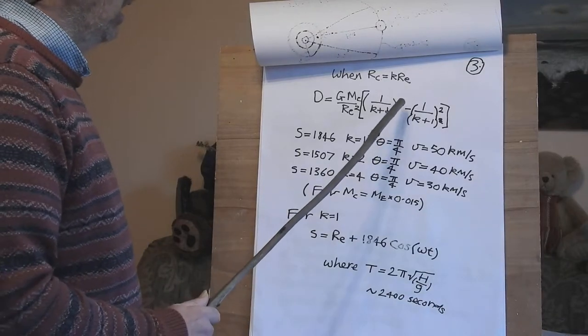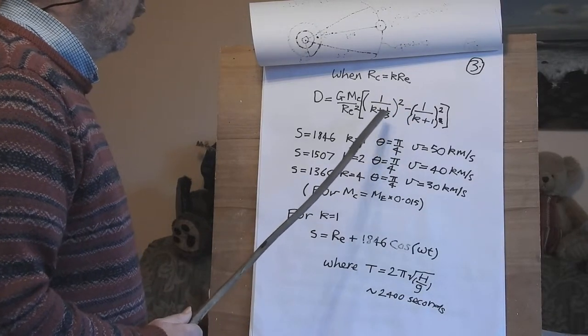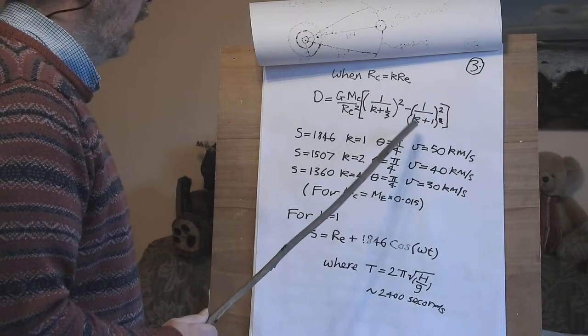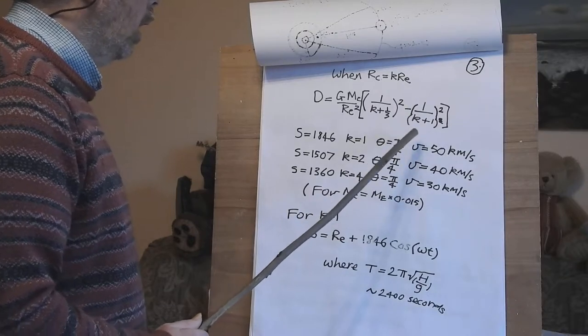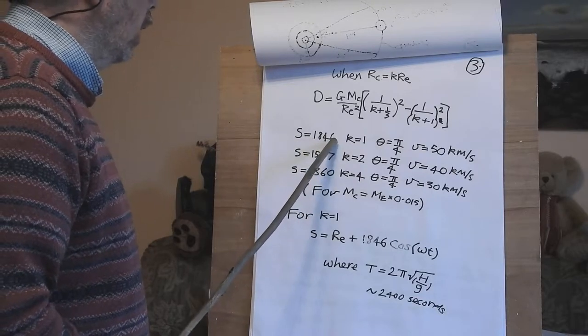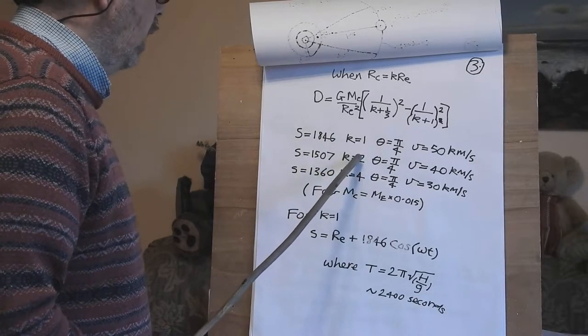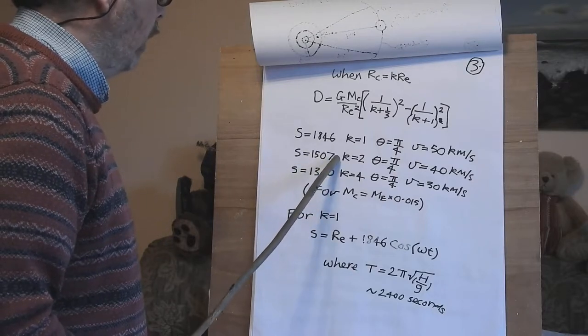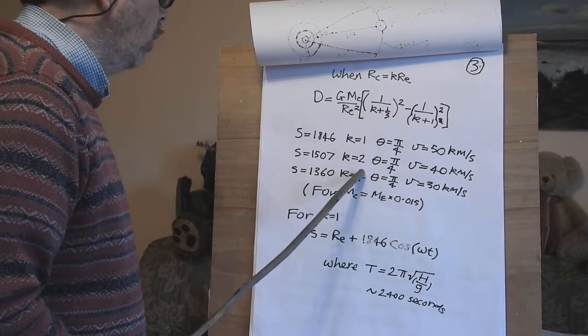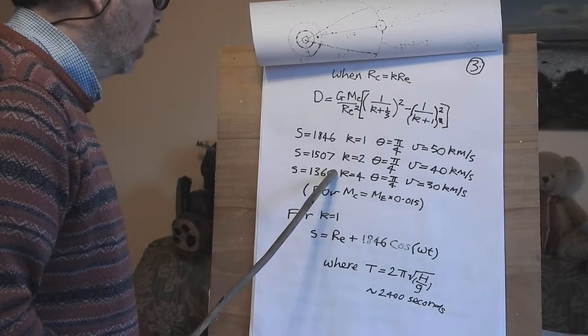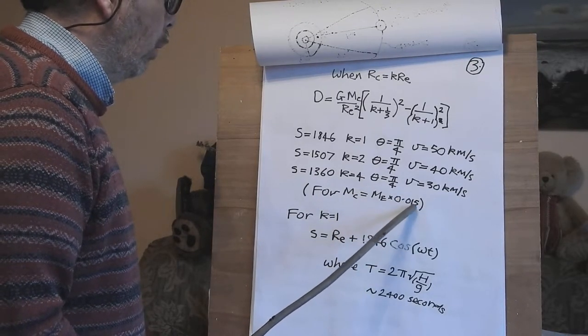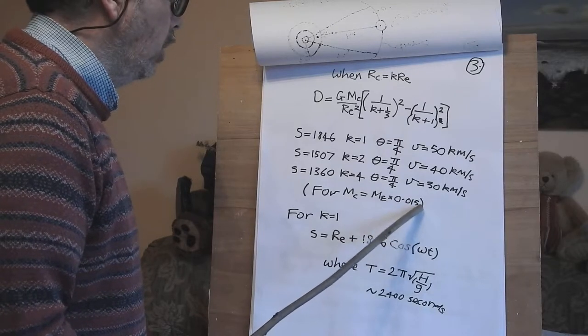When RC equals KRE you get this equation here for the acceleration towards the comet. So for K equals 1 we get S equals 1.8 km. K equals 2 we get 1.5 km. K equals 4 you get 1.3 km. This is for MC equals ME times .015 which is one of the masses of the moons of Jupiter.